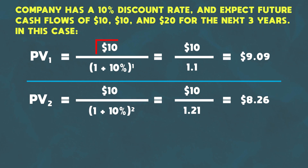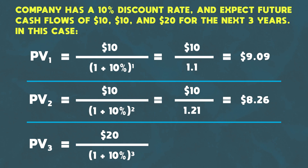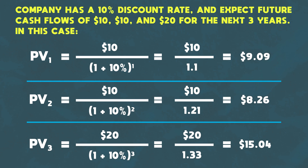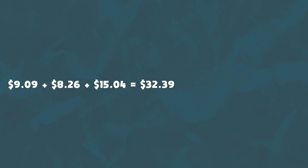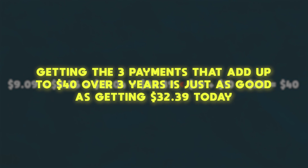So the $10 in year one was worth $9.09 in today's value, and the $10 in year two is only worth $8.26, because you're getting it one whole year later. The present value of the year three cash flow is $20 divided by 1.1 to the third power — $20 divided by 1.33 is about $15.04. So the total present value of the next three years' cash flows is $9.09 plus $8.26 plus $15.04, which is $32.39 — less than the $40 you'd get by simply adding $10 plus $10 plus $20. Getting those three payments totaling $40 over three years is just as good as getting $32.39 today, assuming you can earn a 10% annual return.